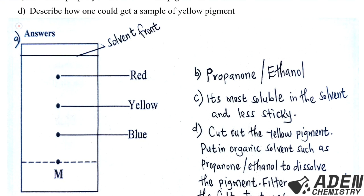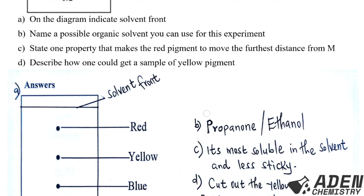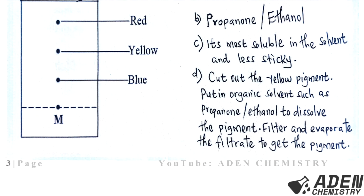Part D: describe how one could get a sample of yellow pigment. First, cut out the yellow pigment spot from the paper. Then place it in an organic solvent such as propanone or ethanol to dissolve the pigment. Finally, filter and evaporate the filtrate to obtain the yellow pigment.